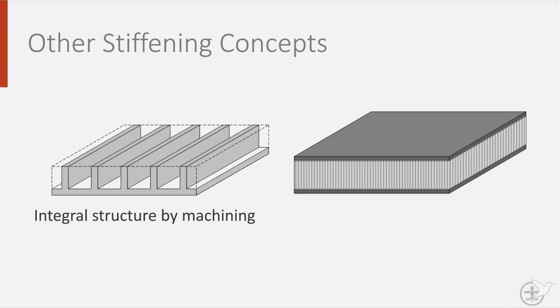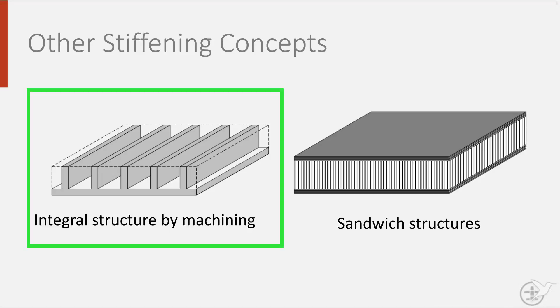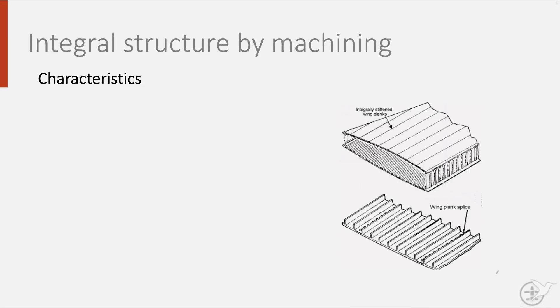Examples of this concept are integral machine structures and sandwich structures. An integral structure, as can be seen in the photo, is machined from a solid piece of metal and has as an advantage that it is low cost and that it reduces the number of parts in your aircraft.